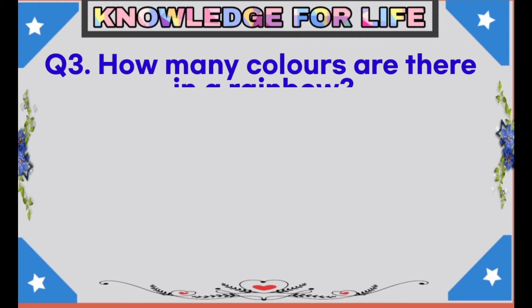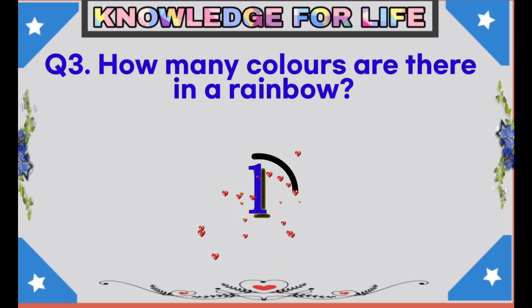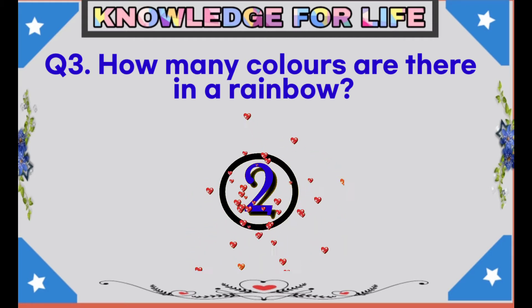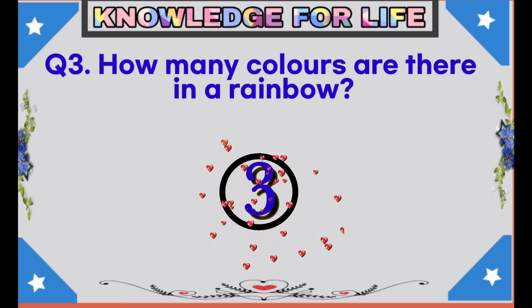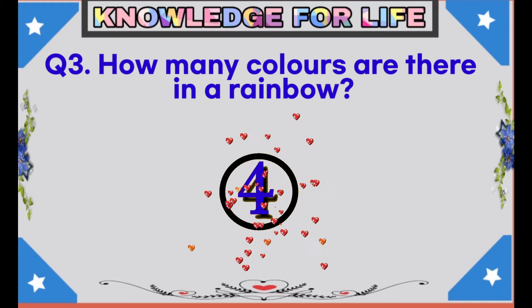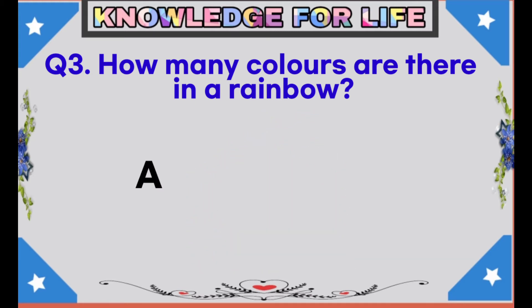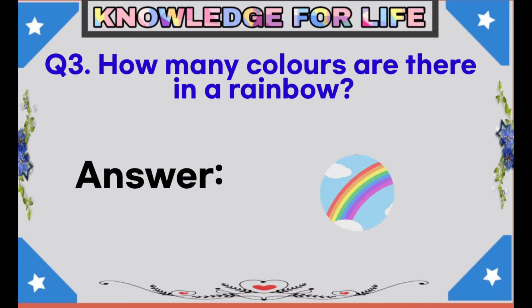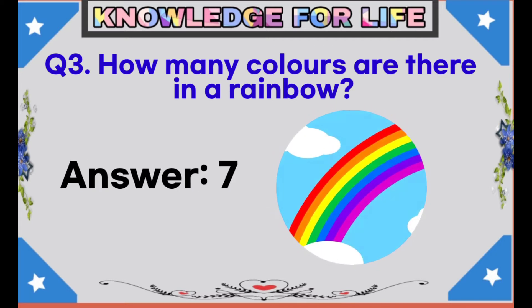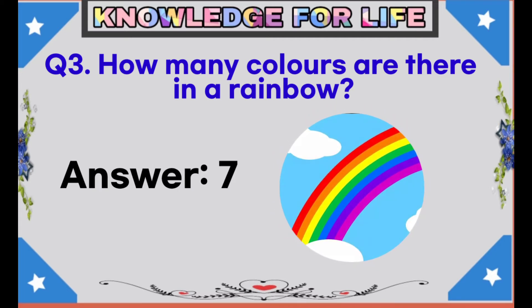Question number 3: How many colors are there in a rainbow? Answer: 7 colors in a rainbow.